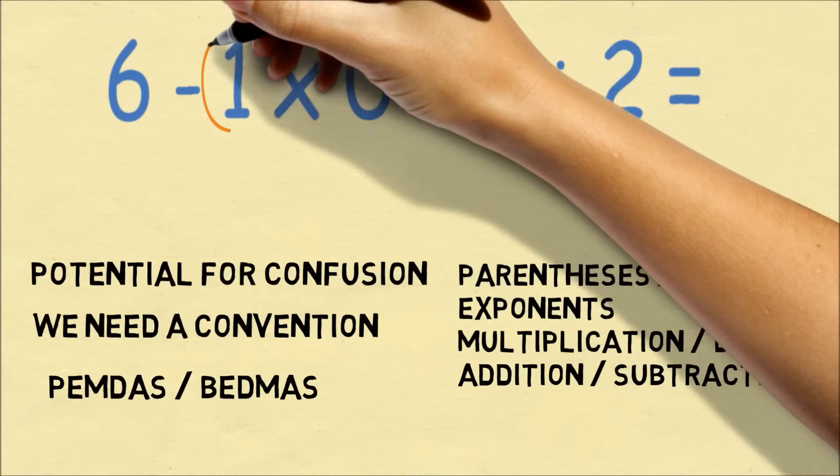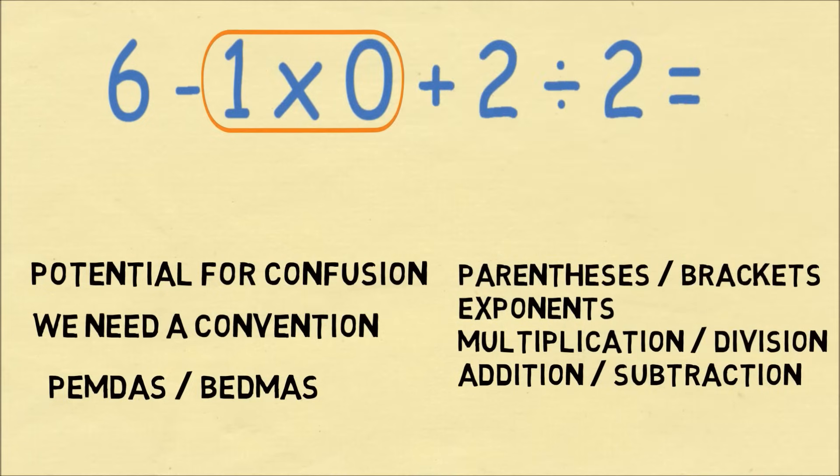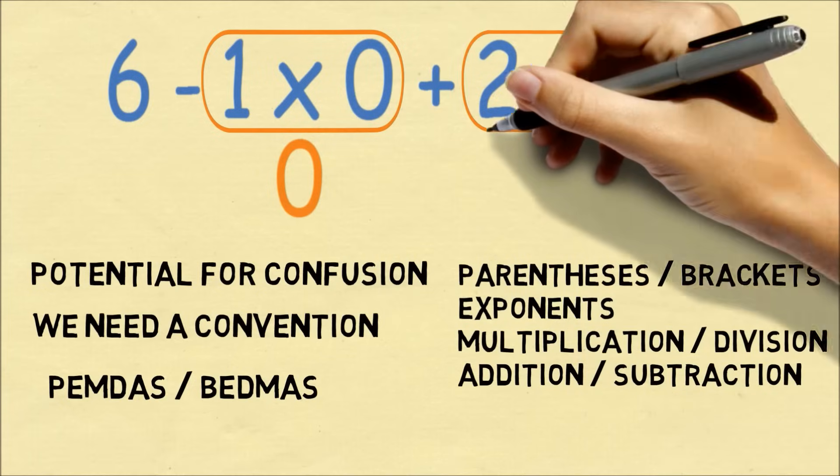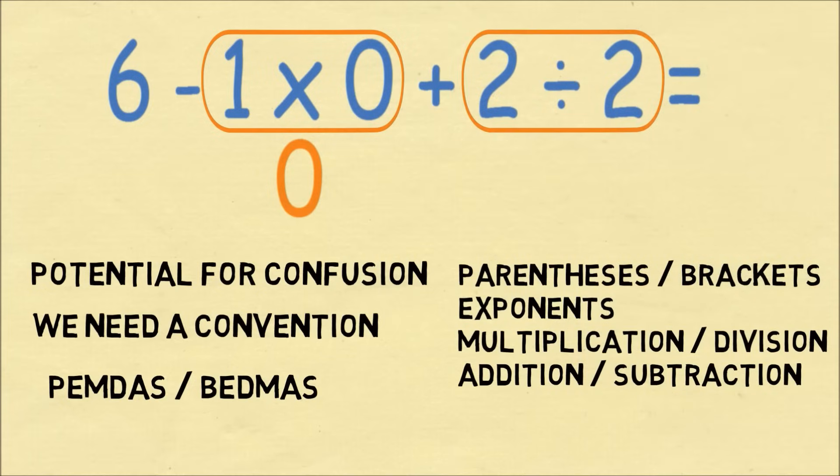So for our problem, there's a multiplication, 1 times 0, which needs to take precedence, that evaluates as 0. Then there's a division of 2 divided by 2, that evaluates into 1.